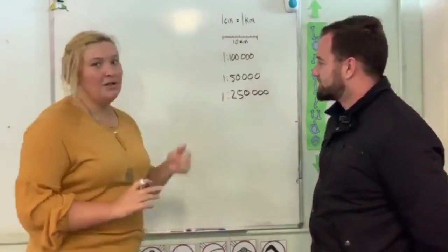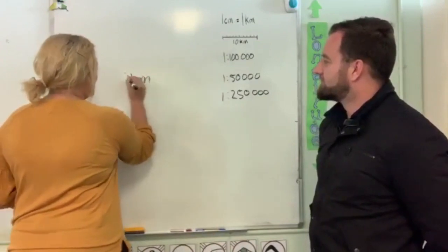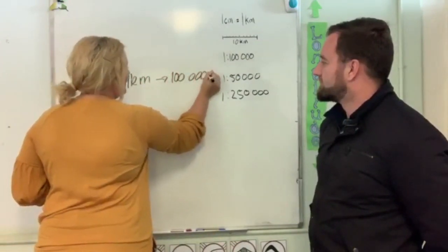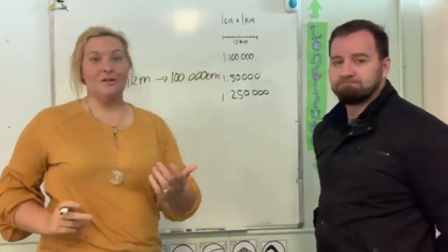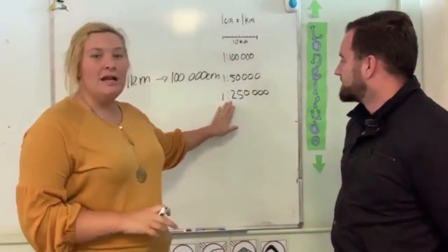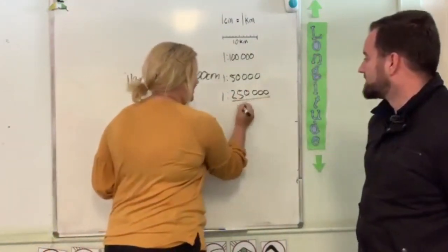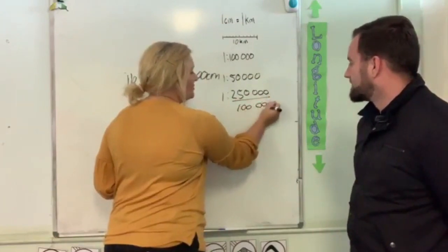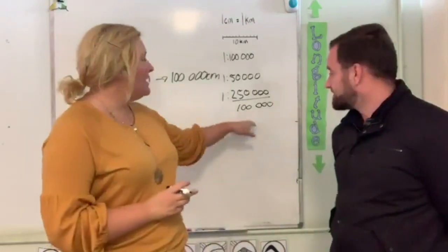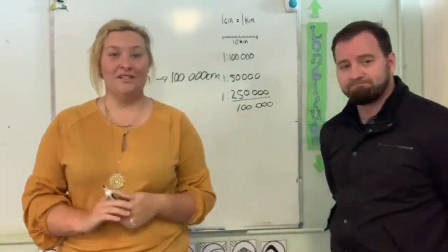For this one, what we're going to understand is that one kilometre is the same as one hundred thousand centimetres. Once we know that rule, what we can do is take any ratio scale and take the number on the right-hand side, and we're going to just simply divide by one hundred thousand. In the HSC, in your test, you're always going to have a calculator. So get it out, divide the right-hand side by one hundred thousand, and you're going to have converted from centimetres straight into kilometres.